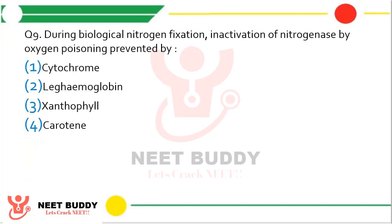Question 9. During biological nitrogen fixation, inactivation of nitrogenase by oxygen poisoning is prevented by which substance: cytochrome, leg hemoglobin, xanthophyll, or carotene? The correct answer is option 2 — leg hemoglobin.